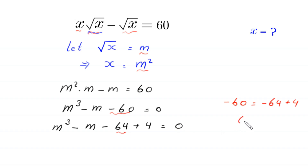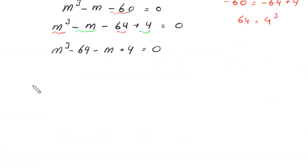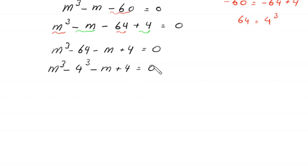Since 64 equals 4 cubed, we regroup: m cubed minus 64 minus m plus 4 equals 0, which becomes m cubed minus 4 cubed minus m plus 4 equals 0.